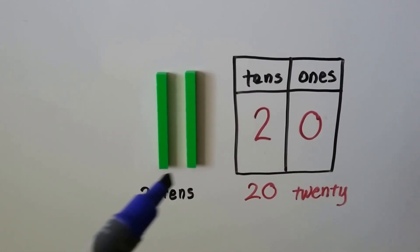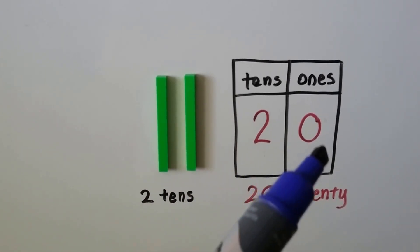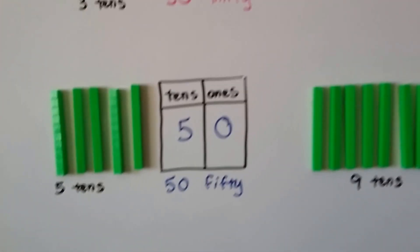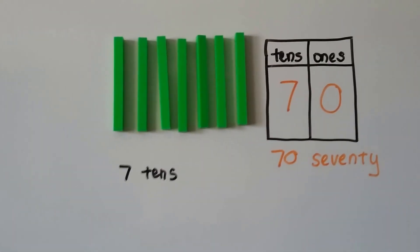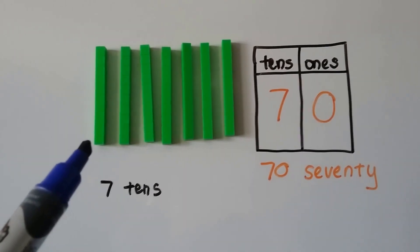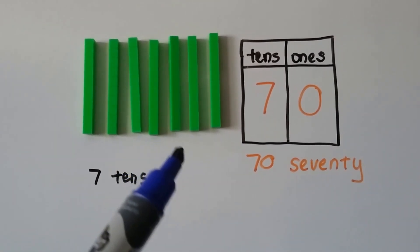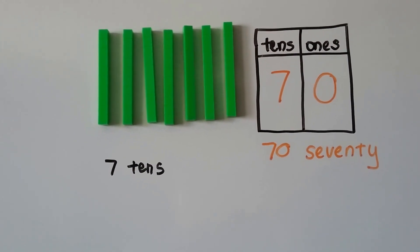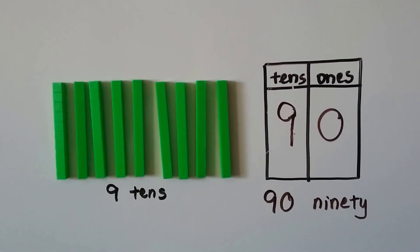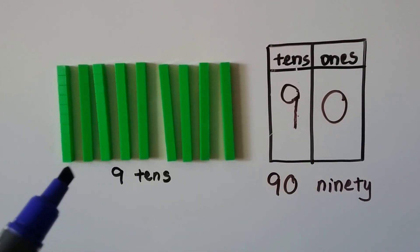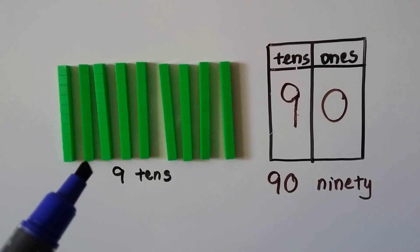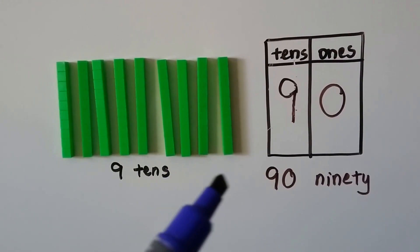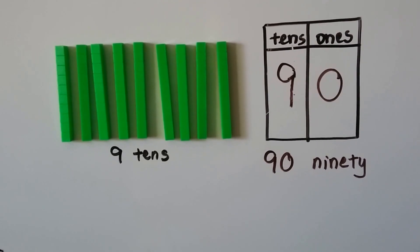We have two tens: 10, 20. Two tens, zero ones, a two then a zero, 20. In this one we have seven tens and zero ones. We can count by 10: 10, 20, 30, 40, 50, 60, 70. It's a seven and a zero, seventy. Now it's a nine and a zero, it's 90.